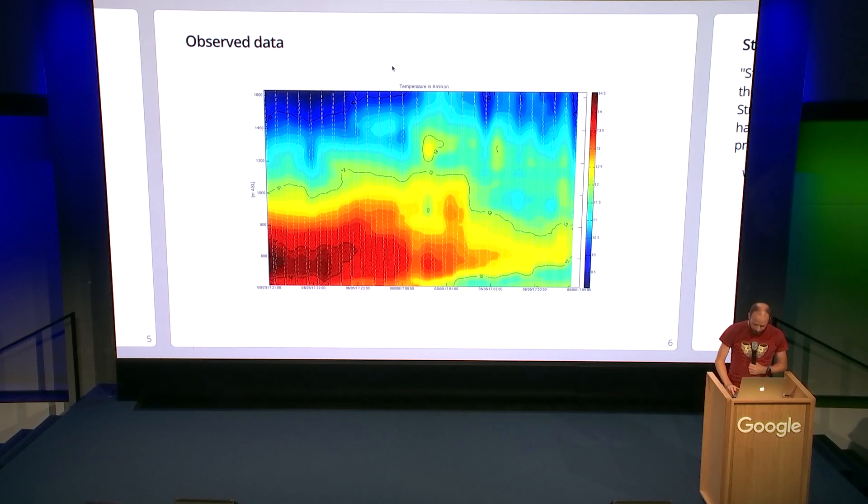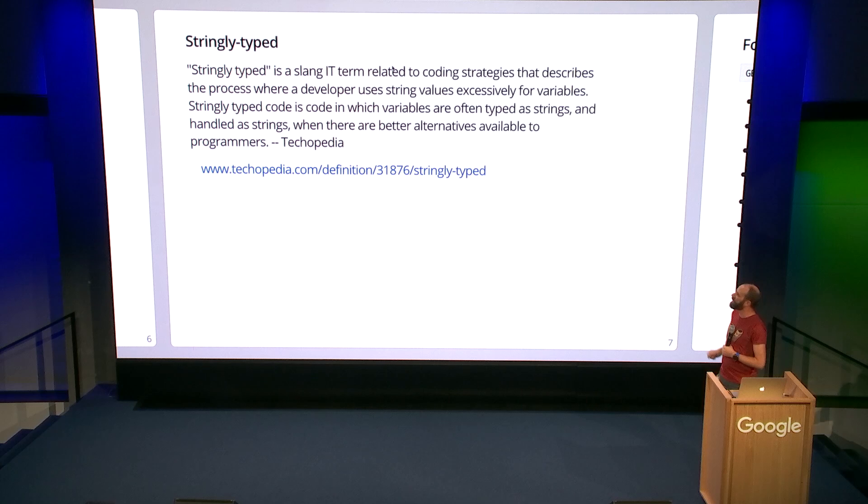But this talk is going to be about Go, not weather. This is particularly about stringly typed APIs. For those who don't know, stringly typed APIs play on strongly typed. It's basically where everything is a string.